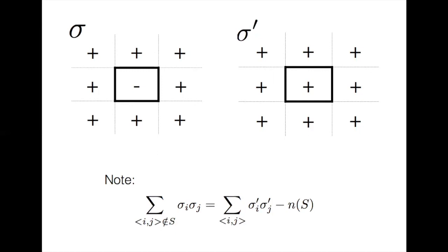Note that the sum over all nearest neighbor bonds not in s is precisely the sum of all nearest neighbor bonds in our prime mapping minus the length of the shoreline. And if you don't believe me, feel free to pause the video and check the math for yourself.